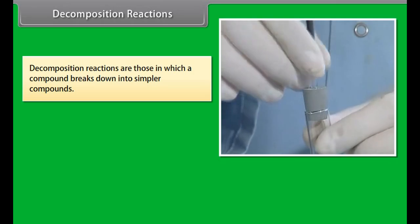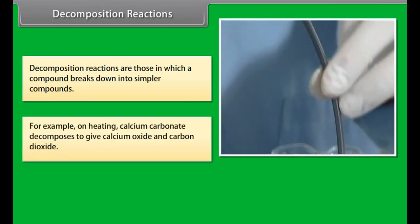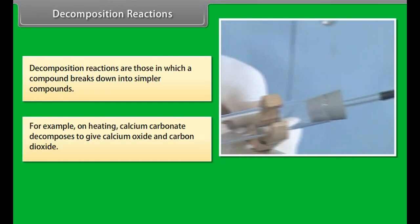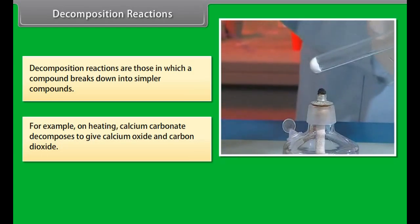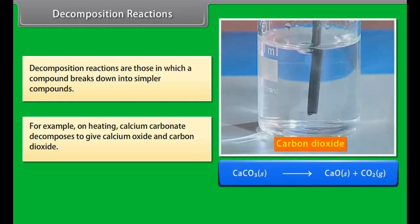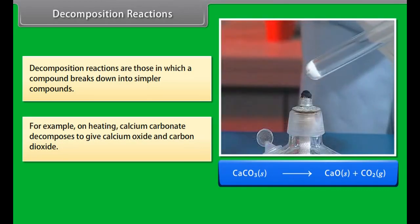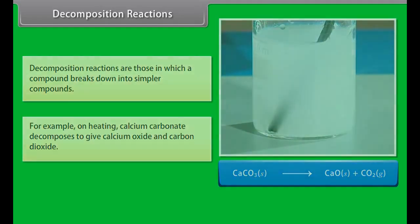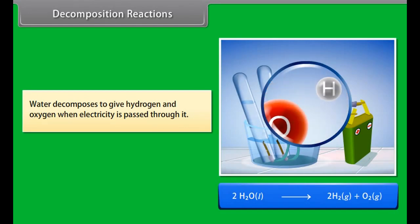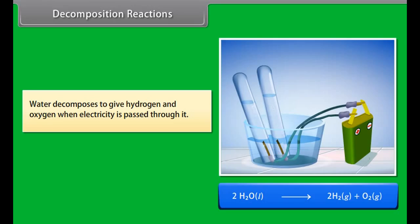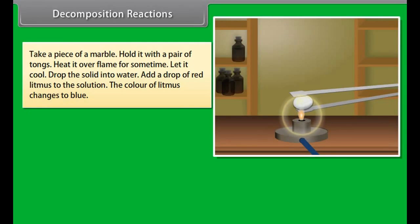Activity: Take a magnesium ribbon and heat it over a flame. It burns giving out a bright white light and the magnesium ribbon becomes white powder. Add some water to the powder and put a drop of red litmus — the red litmus turns blue. This is due to a combination reaction: oxygen in the air combines with magnesium to give magnesium oxide, which reacts with water to give magnesium hydroxide. Being basic, it turns red litmus blue.